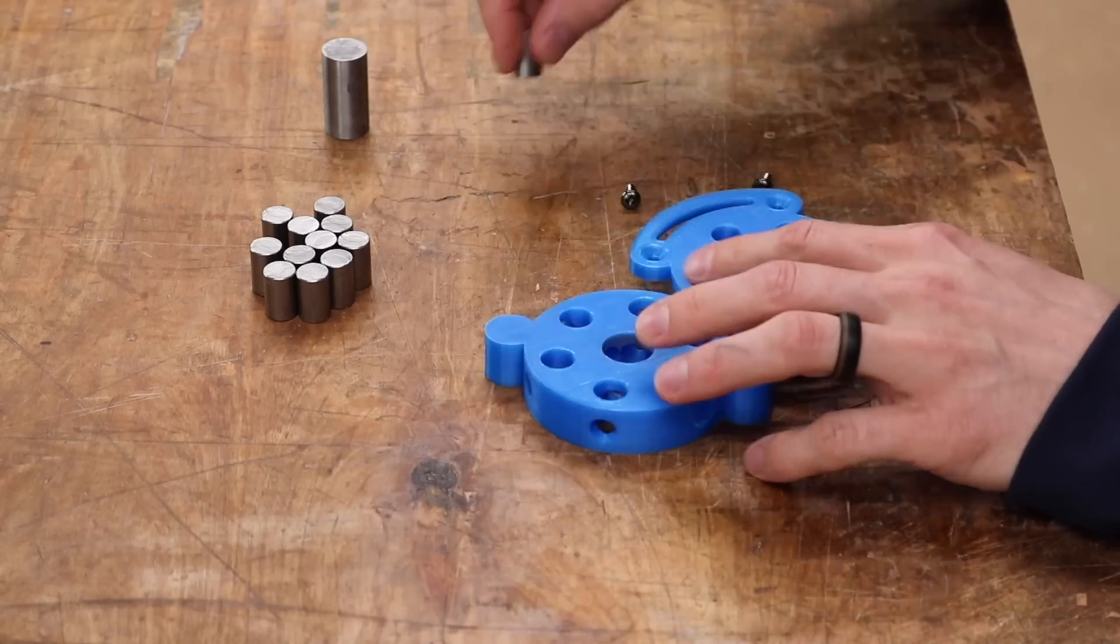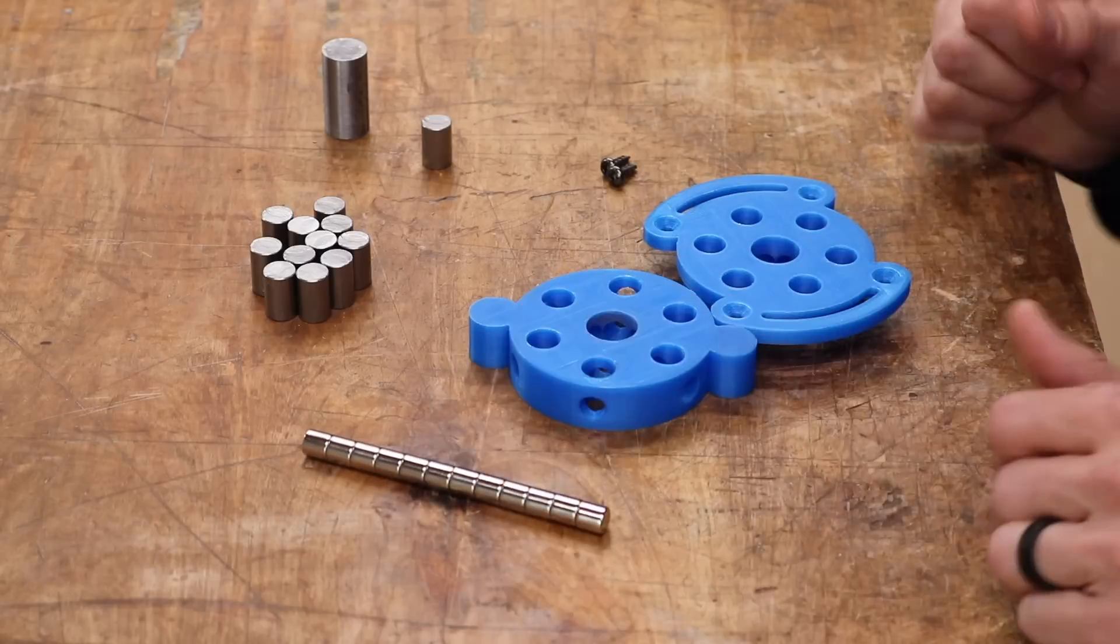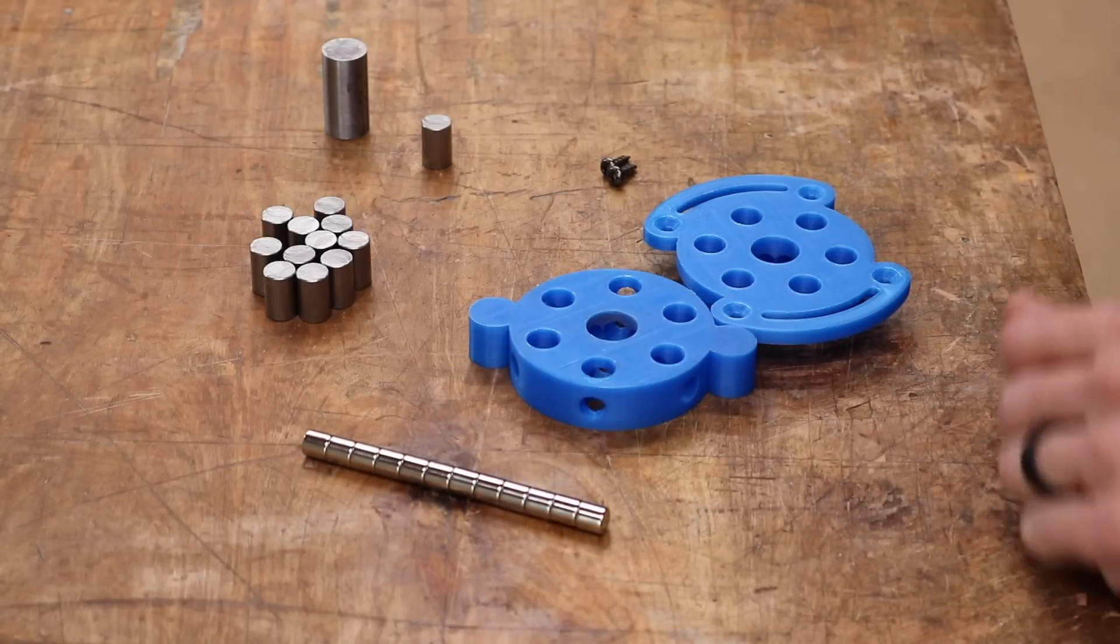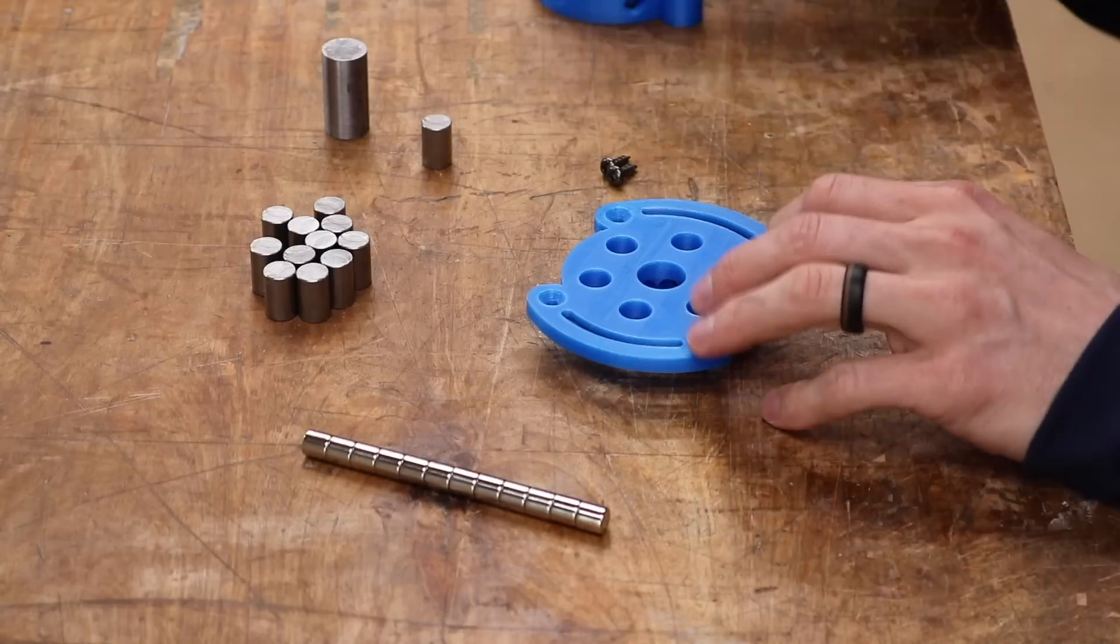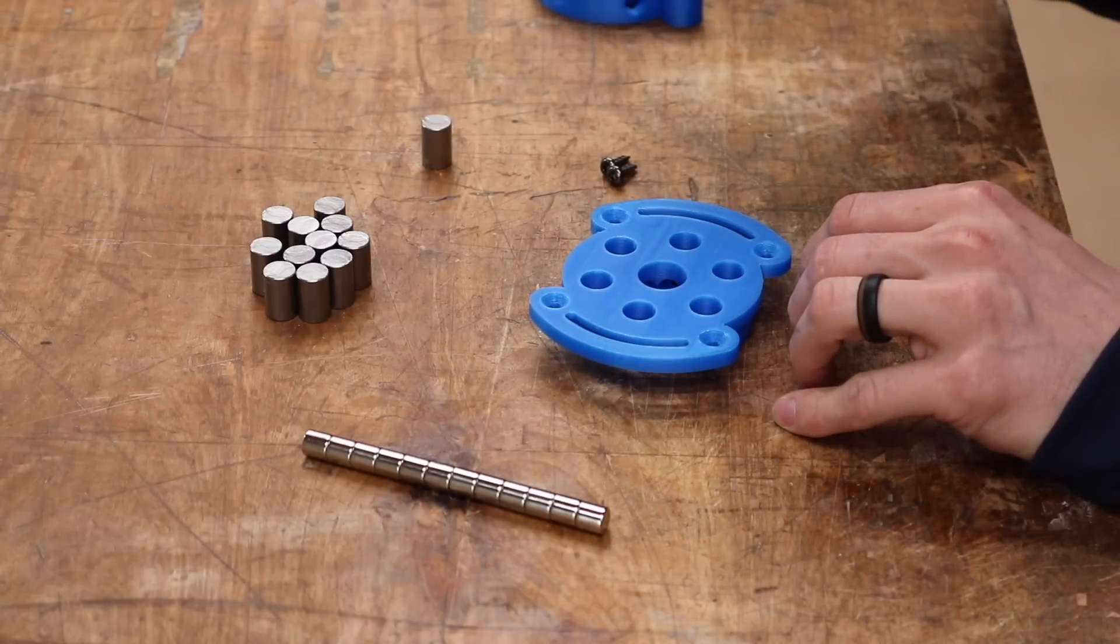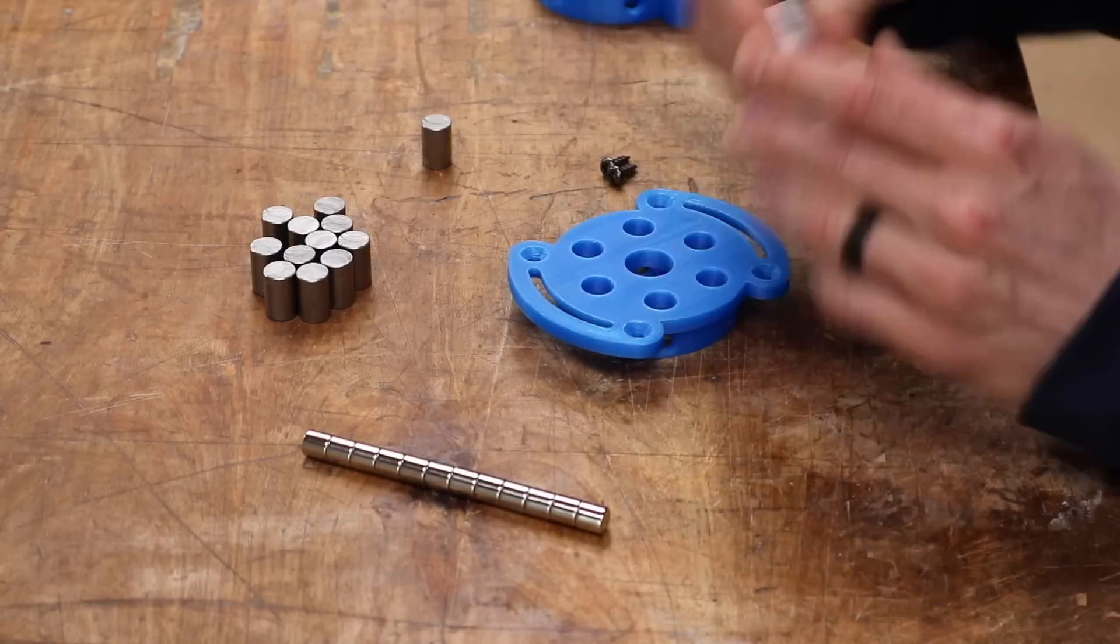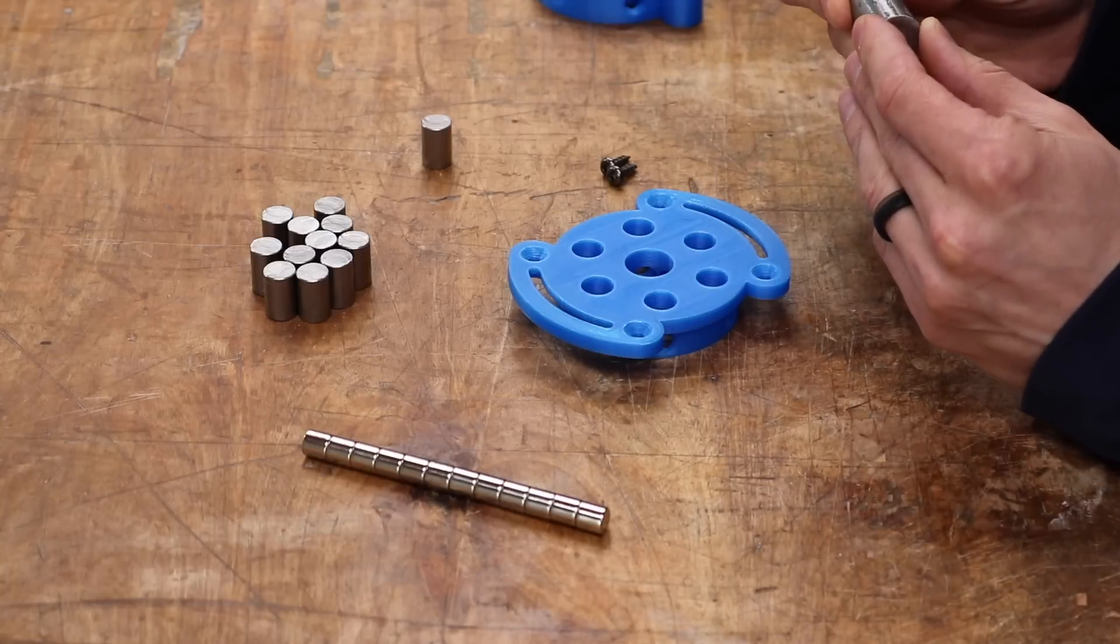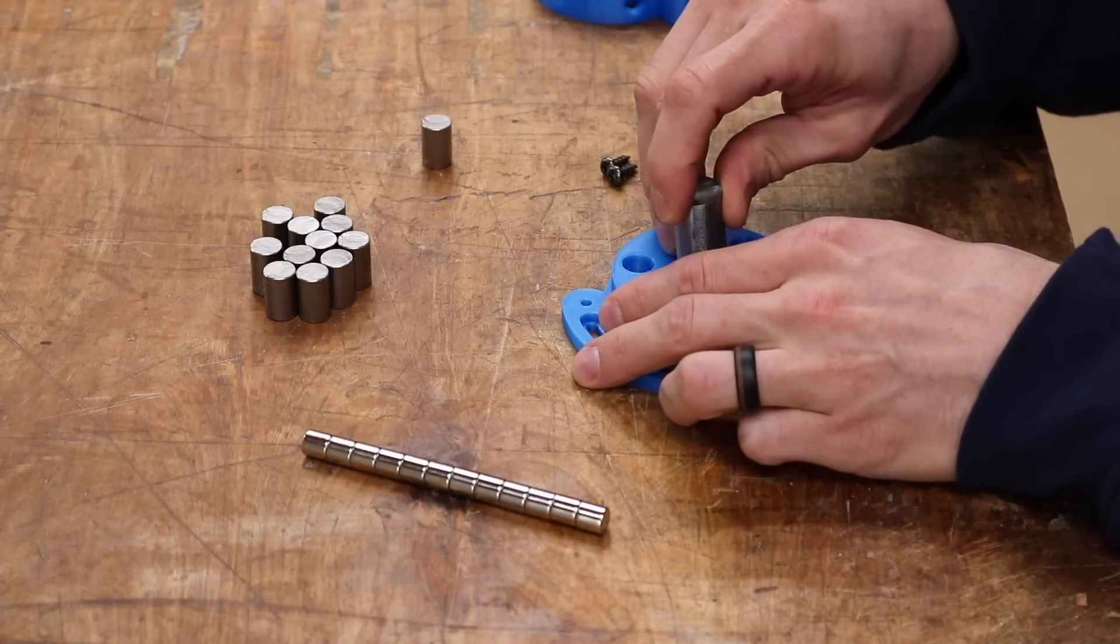And then we have 12 smaller half inch diameter steel rods cut to three quarters of an inch which is the thickness of each individual top and bottom section. A couple screws and 12 three eighth inch diameter three eighth inch long rare earth magnets. And just like with the plywood plans, if you buy the 3D printed plans I'll share my source, the best source I could find for getting these magnets.